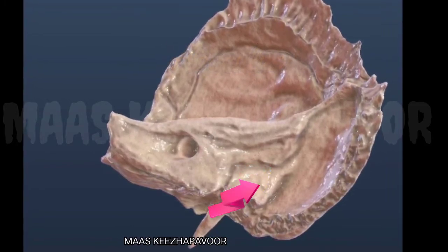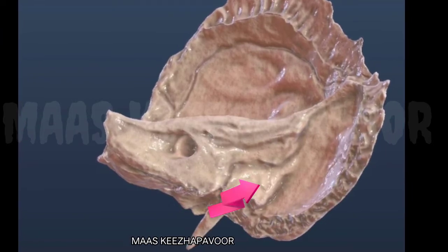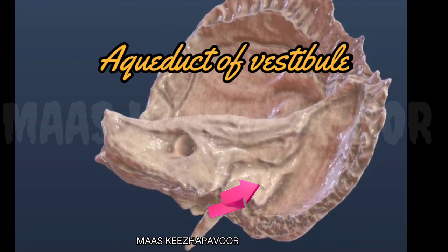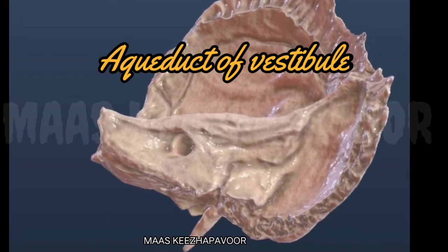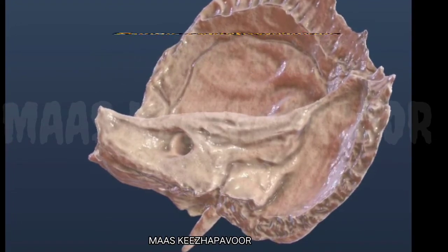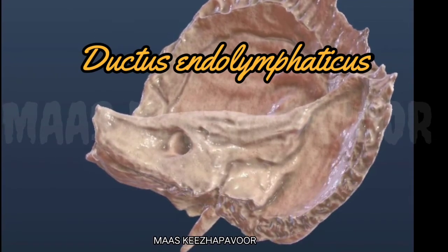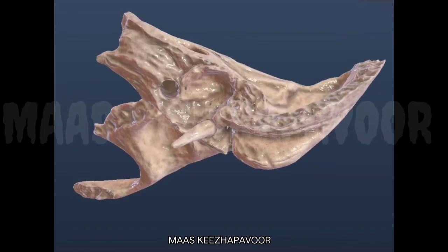The subarcuate fossa lodges the flocculus part of the cerebellum. There is a slit in the lateral part of the subarcuate fossa leading to the aqueduct of the vestibule, which lodges the ductus endolymphaticus.